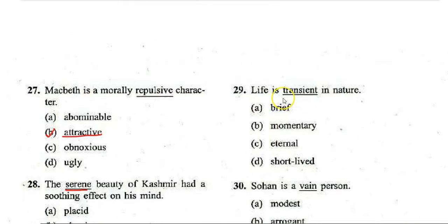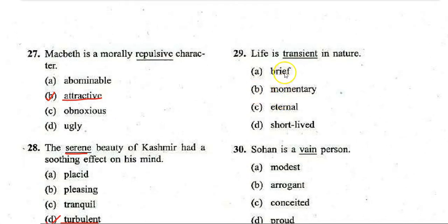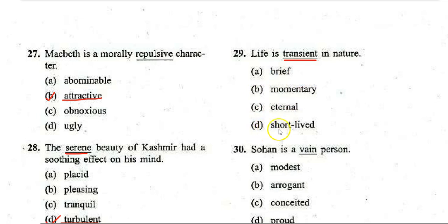Next: 'Life is transient in nature.' Options: A. Deep, B. Momentary, C. Eternal, D. Short-lived. The correct answer is C — 'eternal.' The antonym of 'transient' is 'eternal.'